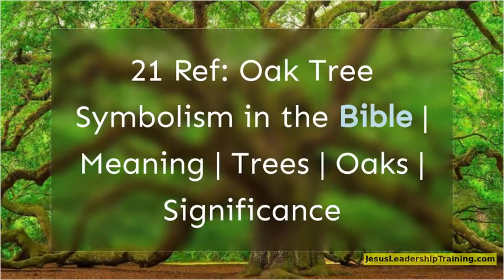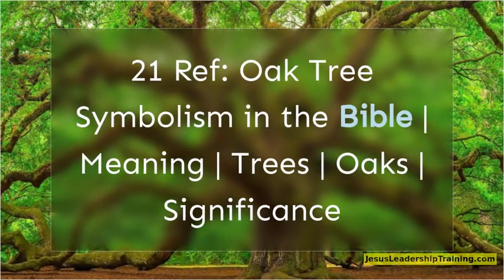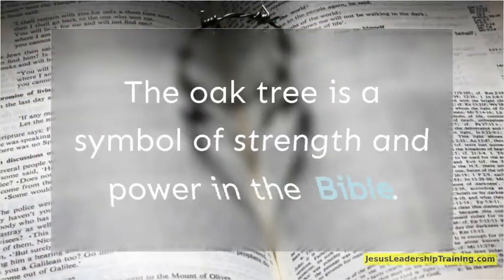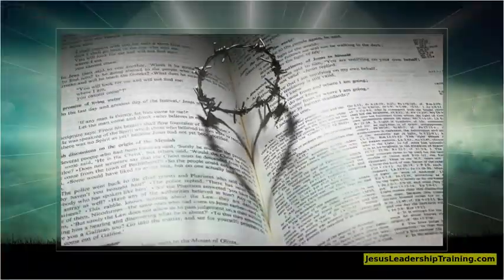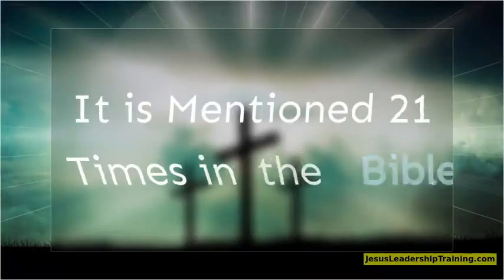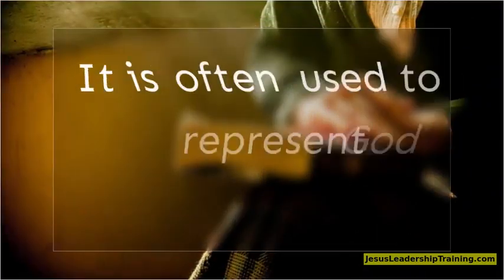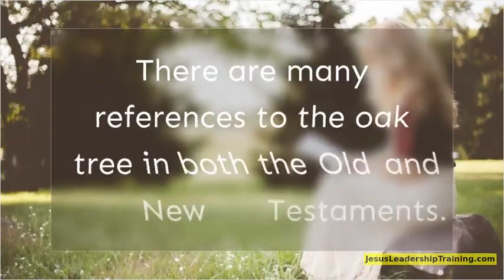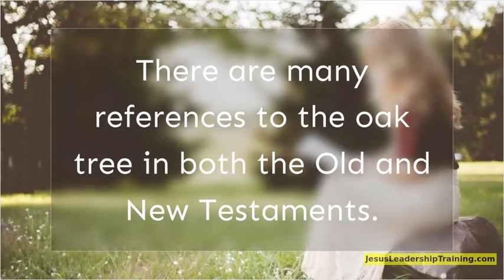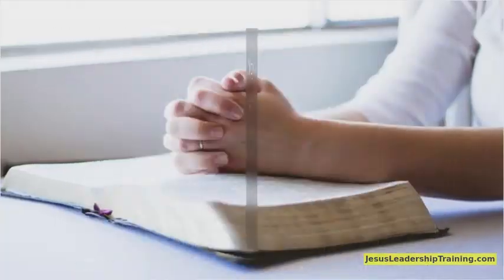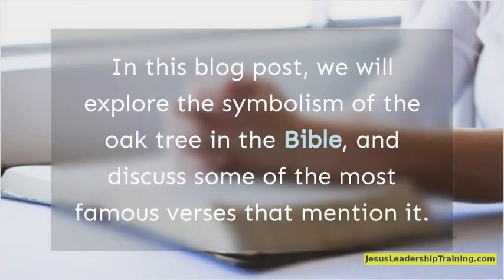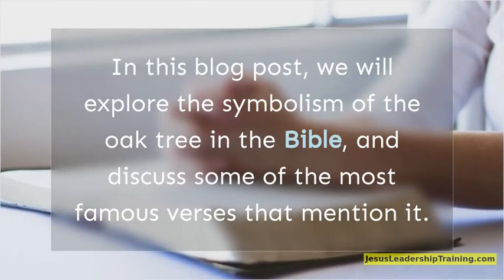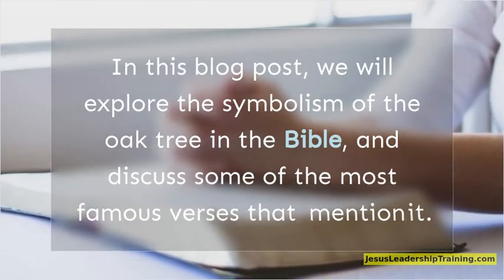Oak Tree Symbolism in the Bible: Meaning, Trees, Oaks, Significance. The oak tree is a symbol of strength and power in the Bible. It is mentioned 21 times in the Bible and is often used to represent God or Jesus Christ. There are many references to the oak tree in both the Old and New Testaments. In this blog post, we will explore the symbolism of the oak tree in the Bible and discuss some of the most famous verses that mention it.